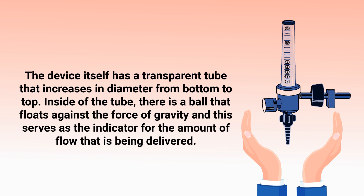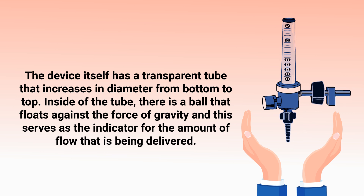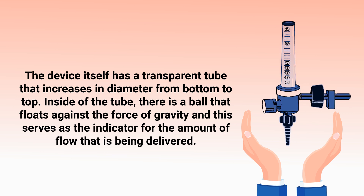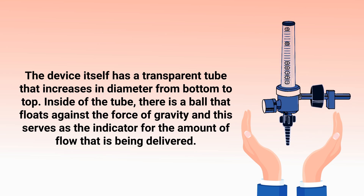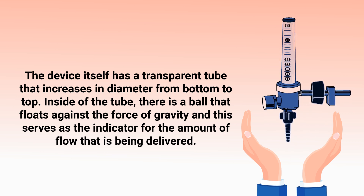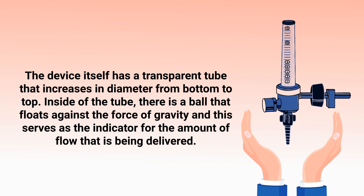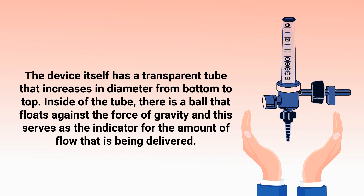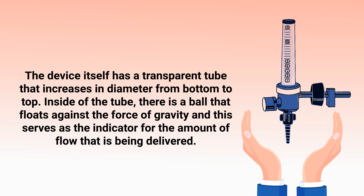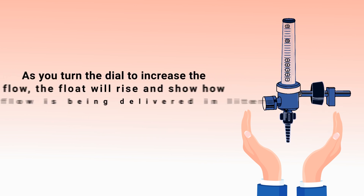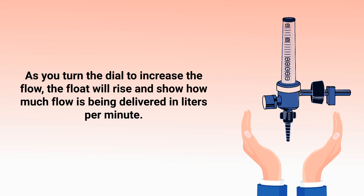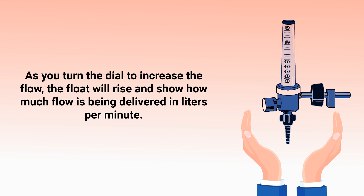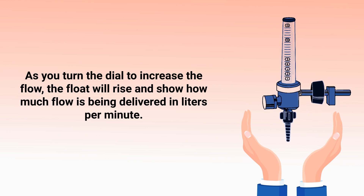The device itself has a transparent tube that increases in diameter from bottom to top. Inside of the tube there is a ball that floats against the force of gravity, and this serves as the indicator for the amount of flow being delivered. As you turn the dial to increase the flow, the float will rise and show how much flow is being delivered in liters per minute.